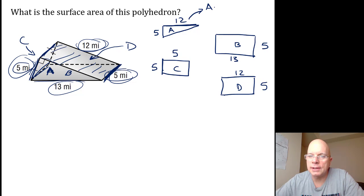That's one half base times height because it's a triangle. So one half multiplied by 12 multiplied by 5. Half of 12 is 6, and 6 times 5 is 30. So the area of face A is 30.